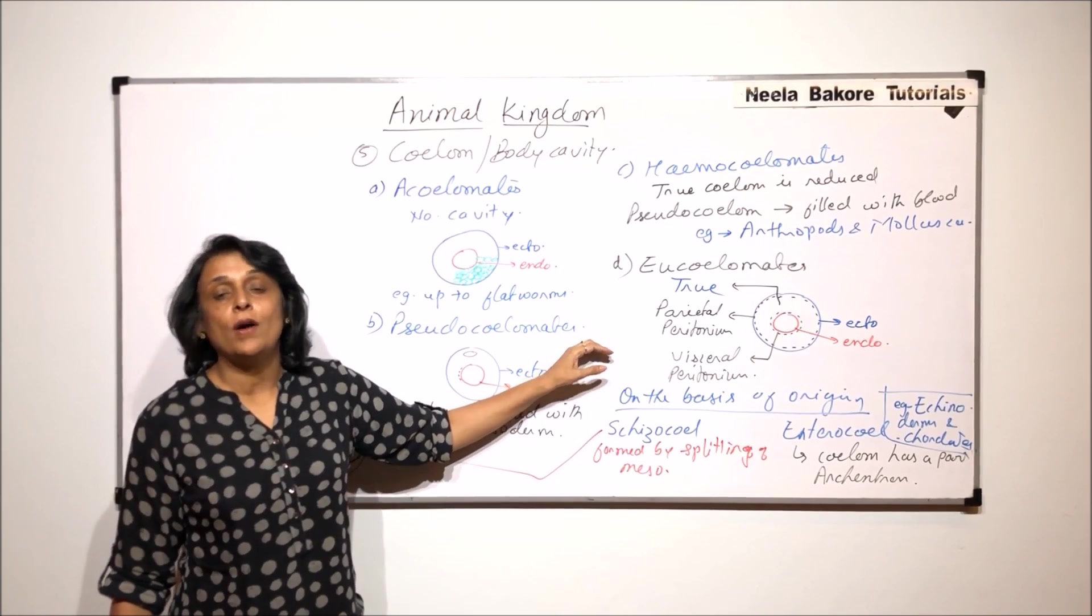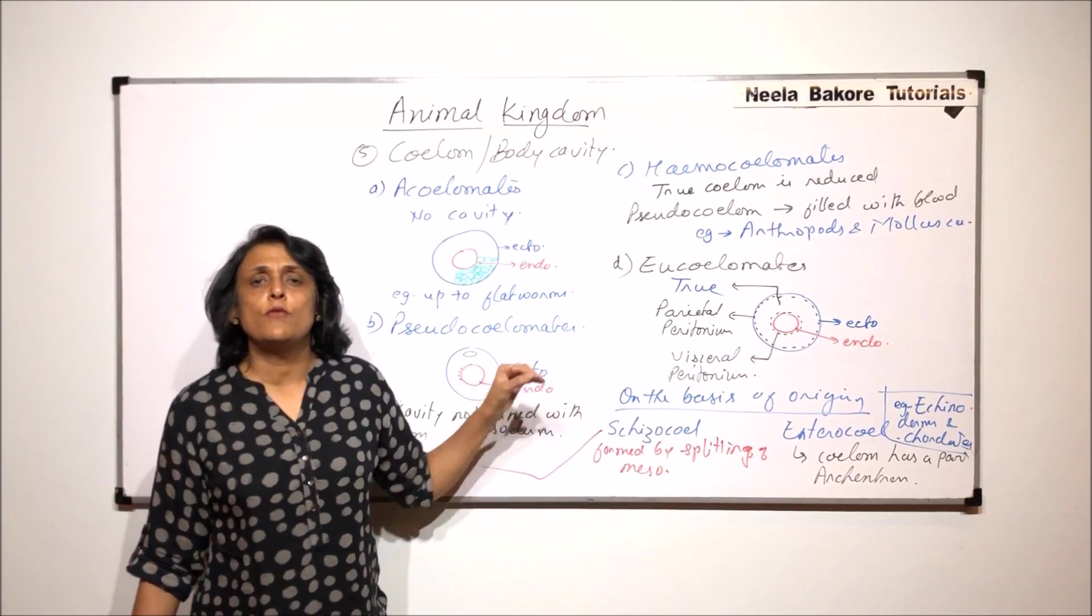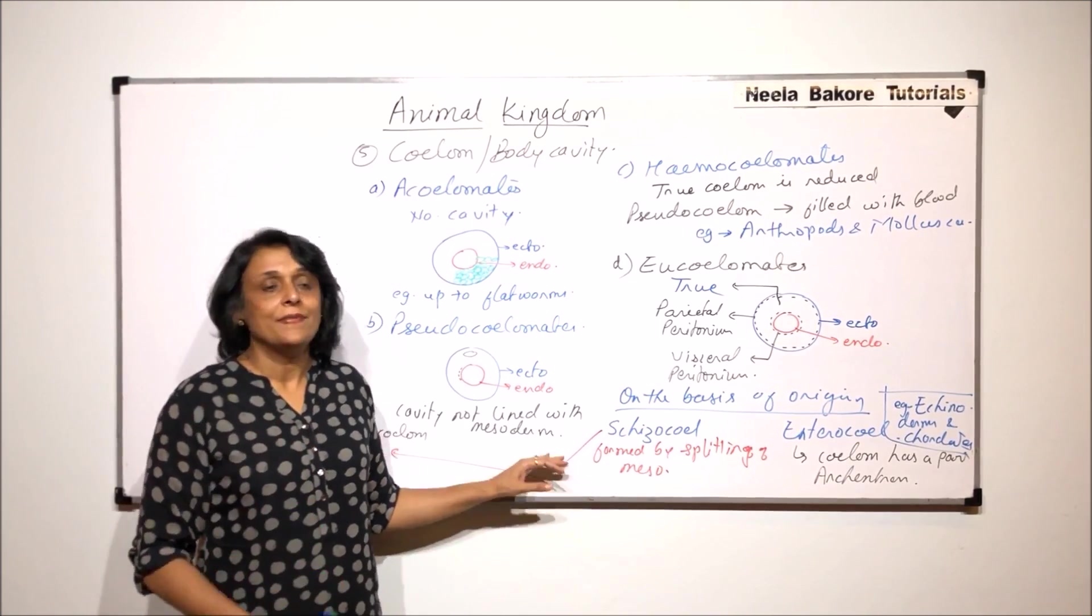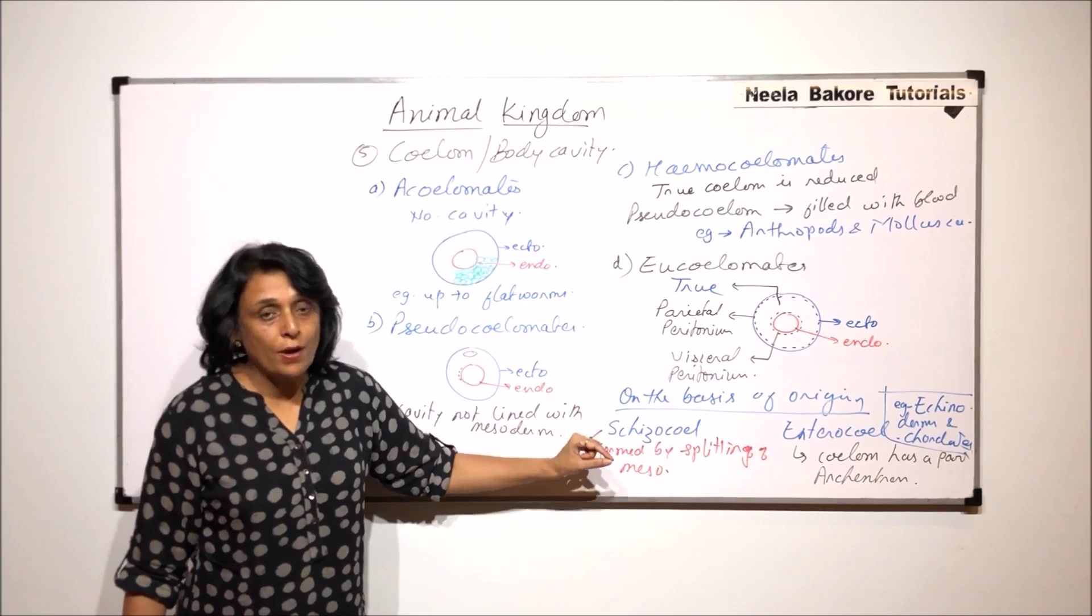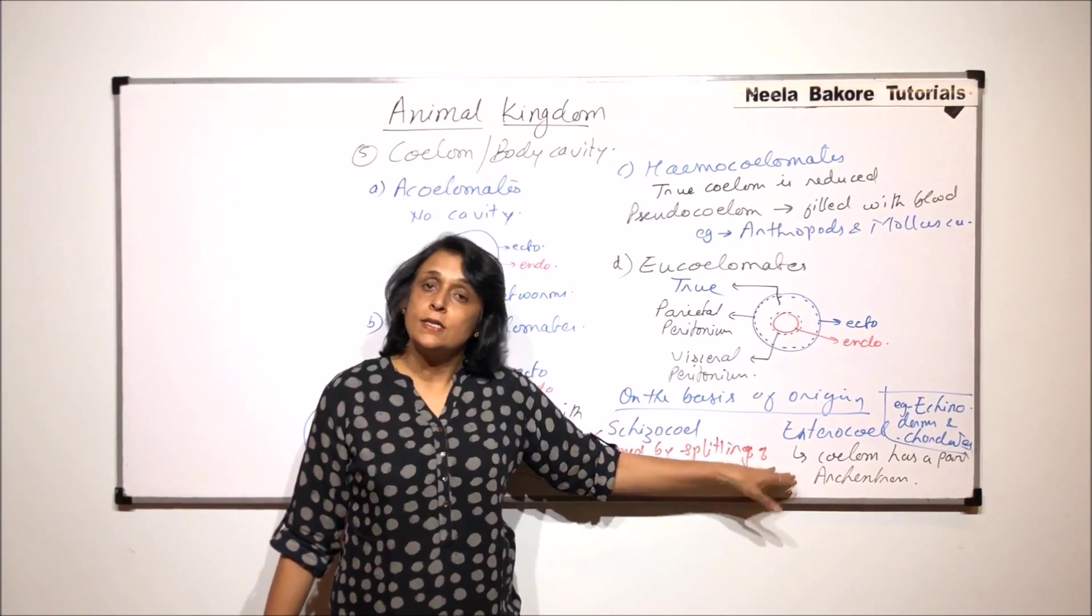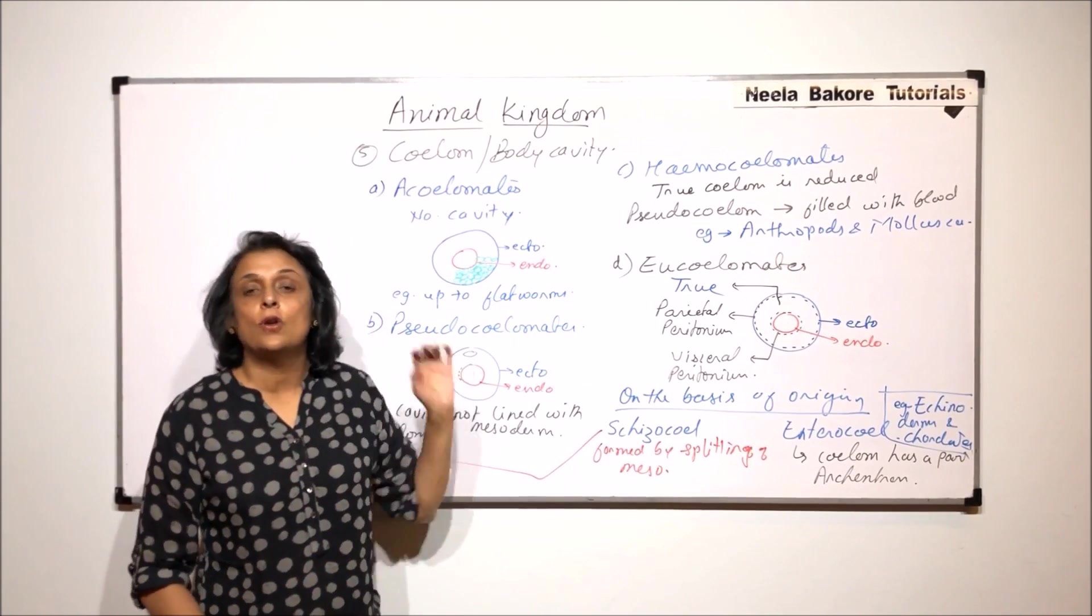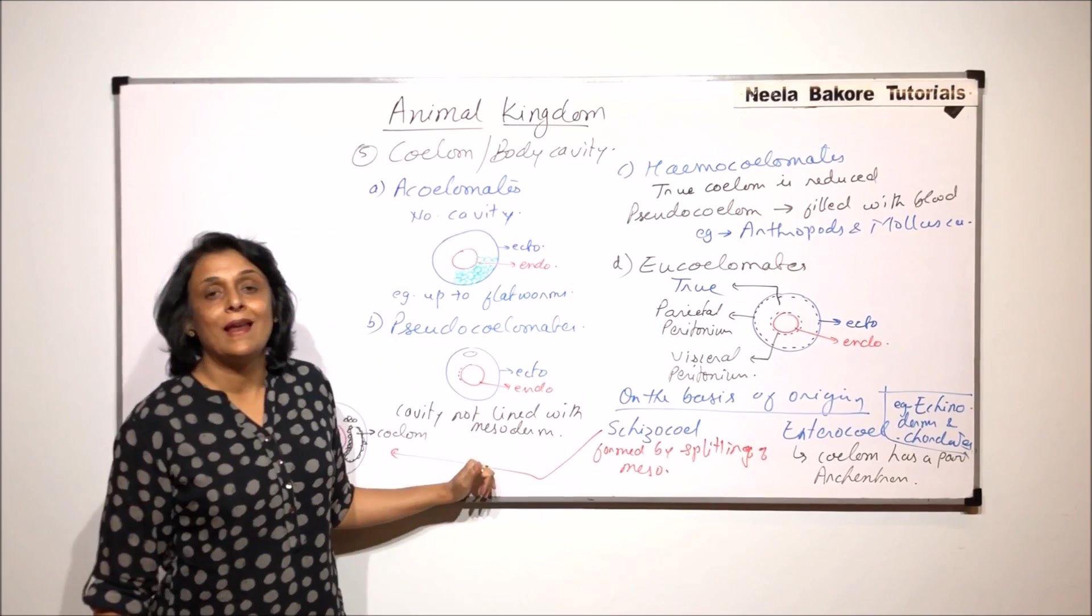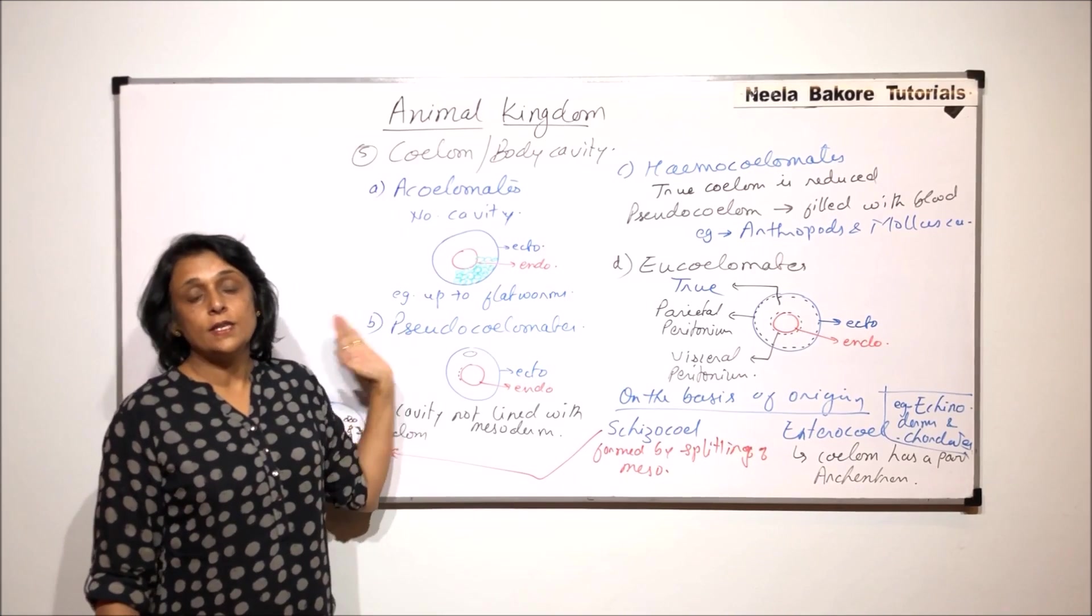And all other phyla which have body cavity, they would come under the animals which show schizocoelom. So we can classify this coelom on the basis of whether it is true or not, whether it exists or not. And secondly, on the basis of origin, how exactly this cavity originates. If it is formed by the splitting of mesodermal mass, then we call it schizocoelom. All animals except echinoderms and chordates. That means all animals which have body cavity except these two will come here. And enterocoelom is true body cavity lined with mesoderm, but it also includes a part of archenteron. That is, the cavity which is there in gastrula. Then it is known as enterocoelom. So this is how we classify the animals on the basis of coelom.